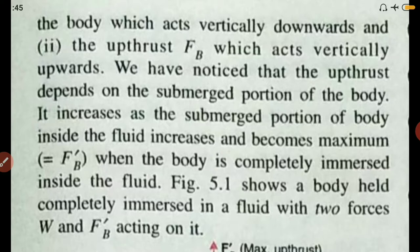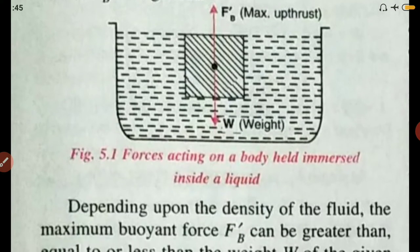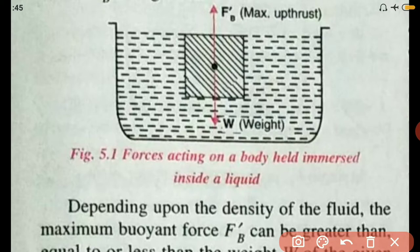We have understood this from our previous video. Looking at the diagram from the book, we can see the body is completely immersed inside the fluid. The weight acts vertically downwards and the maximum buoyant force FB dash acts upwards. This is the condition when the body is completely immersed in the fluid.